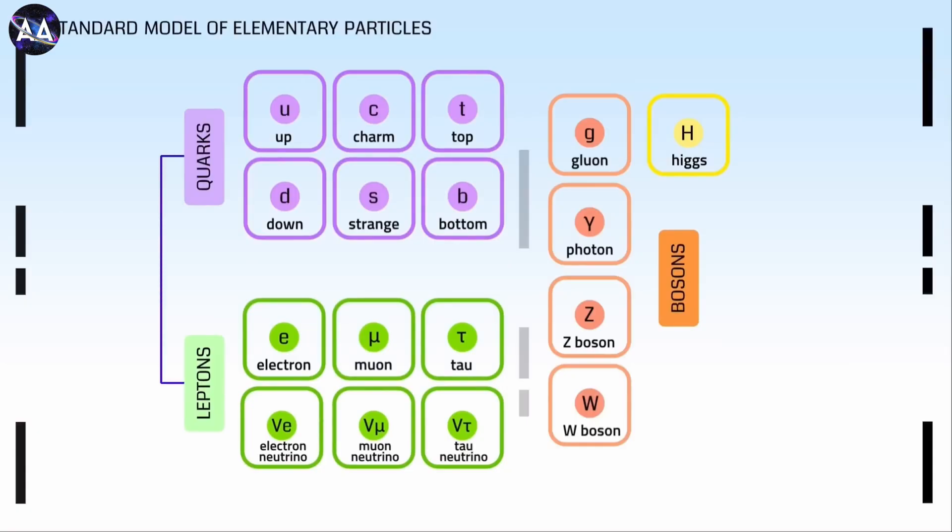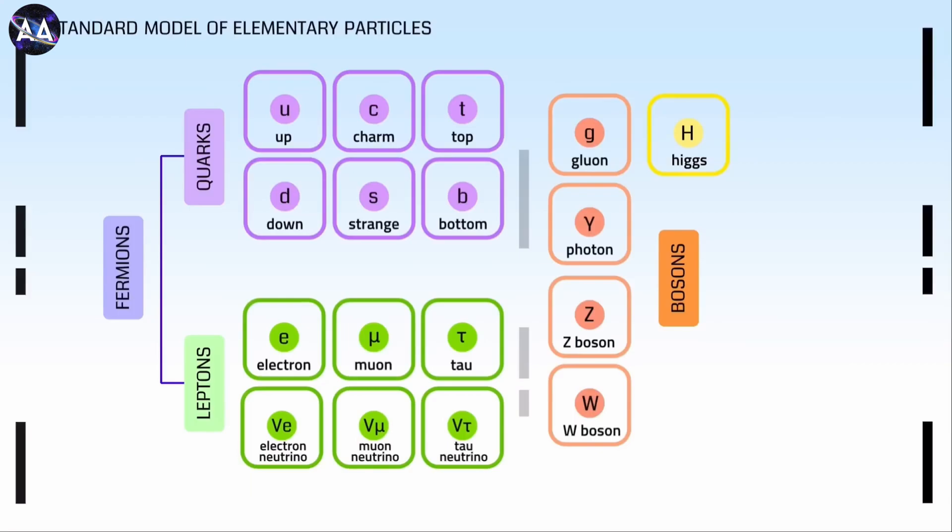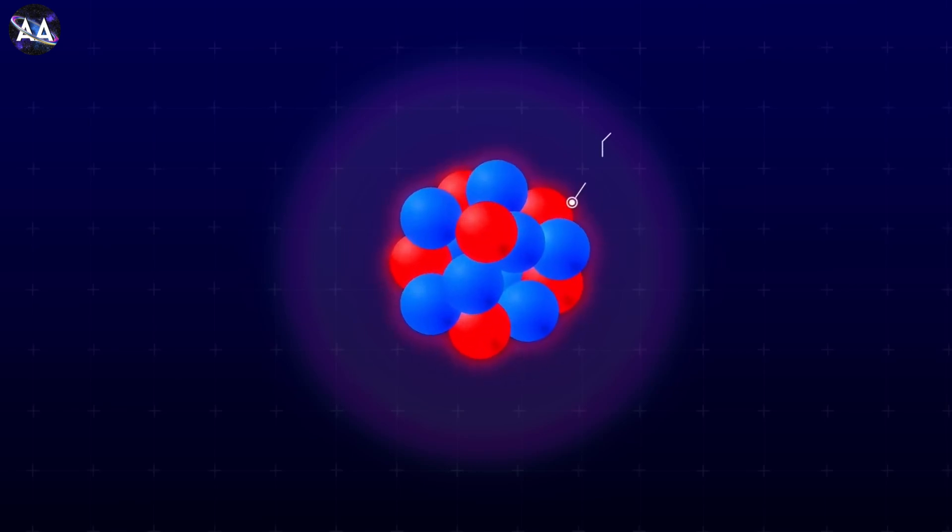These are the building blocks of matter divided into quarks. There are six types of quarks: up, down, charm, strange, top, and bottom. These combine to form protons and neutrons, which make up the nucleus of an atom.